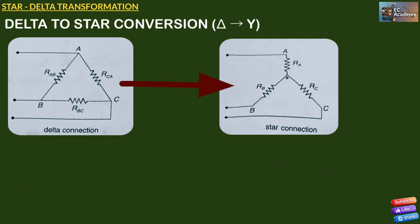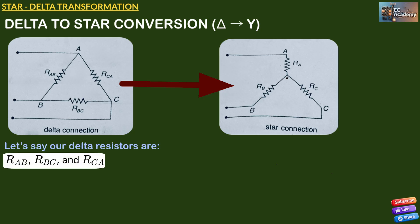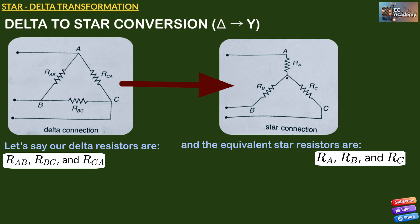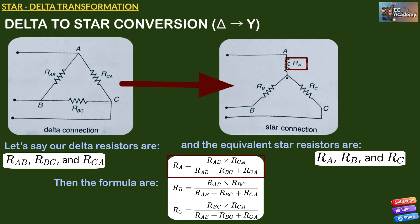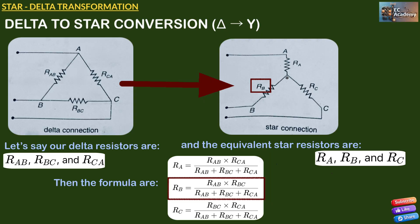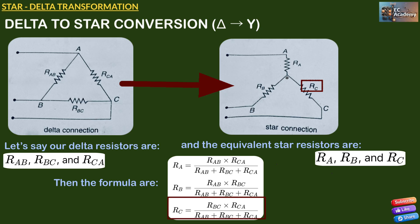Let us see the delta to star conversion. Let us say our delta resistors are RAB, RBC, and RCA. RA equals RAB multiplied by RCA divided by (RAB + RBC + RCA). Each star resistor equals the product of the two adjacent delta resistors divided by the sum of all three delta resistors, which is very simple to write.